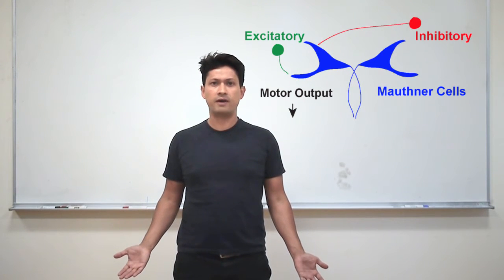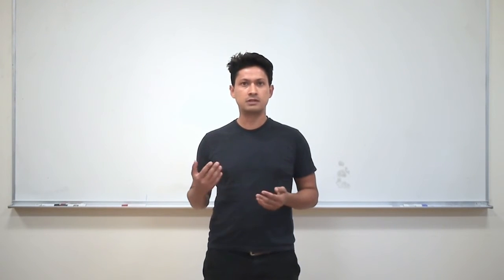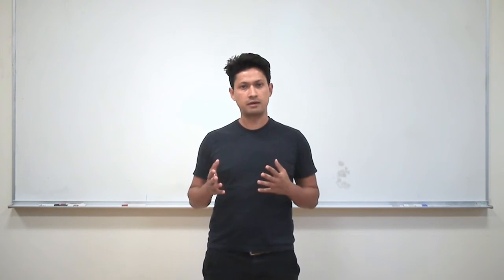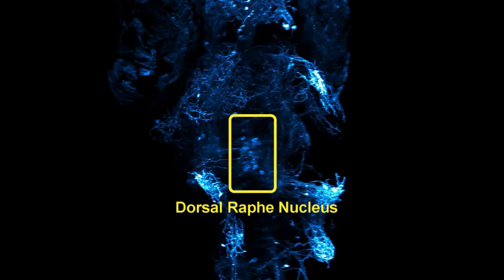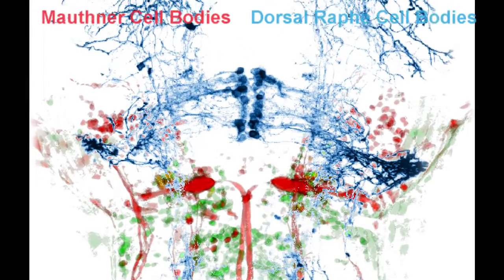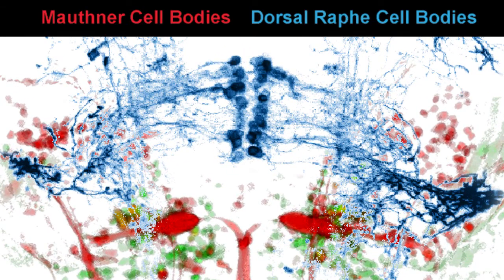But what could be affecting the properties of the startle circuit? Neuromodulators are neurotransmitters such as serotonin and dopamine that affect the properties of neural circuits at relatively slow time scales, seconds to minutes to hours, and increase the flexibility of neural circuits. Serotonergic neurons in the dorsal raphe nucleus send projections to the startle circuit where serotonin receptors are expressed. We wondered if differences in neuromodulation could explain the differences in behavior and in Mauthner cell activation between different individuals.